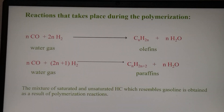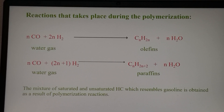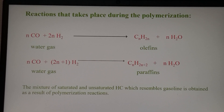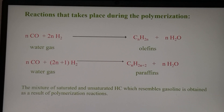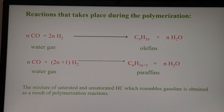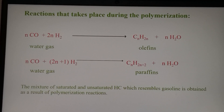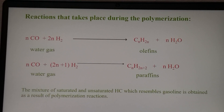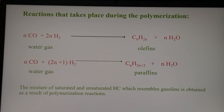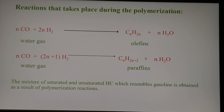The reactions that take place: water gas enriched with more hydrogen undergoes polymerization and produces olefins, which are unsaturated hydrocarbons, and also paraffins, which are saturated hydrocarbons. These further polymerize to produce a liquid which resembles gasoline. This is how gasoline can be produced synthetically using the Fischer-Tropsch method, allowing countries which do not have crude oil to produce high quality petrol using this process.